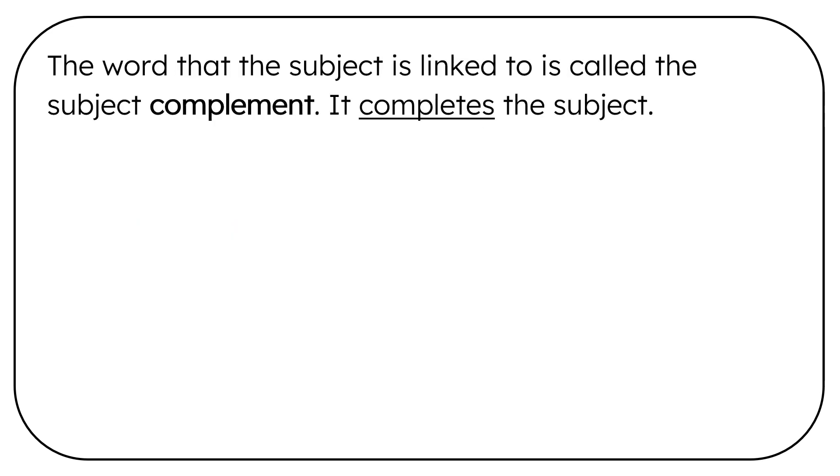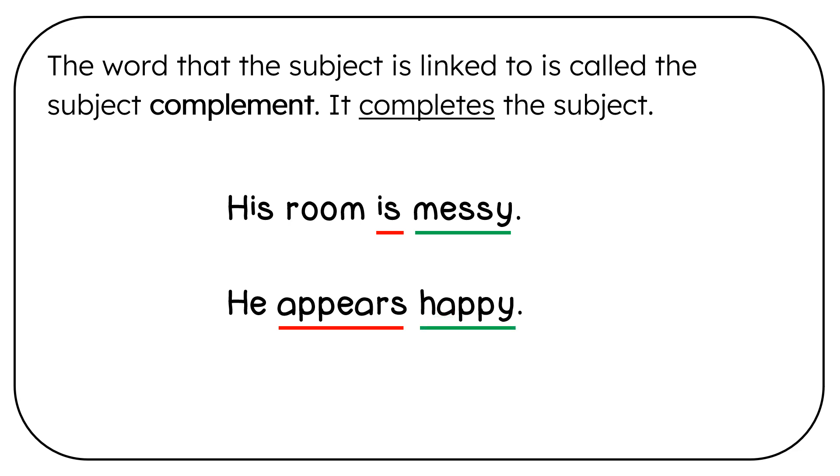The word that the subject is linked to is called the subject complement. It completes the subject. His room is messy. Is is the linking verb. Messy is the subject complement. He appears happy. Appears is the linking verb. Happy is the complement.